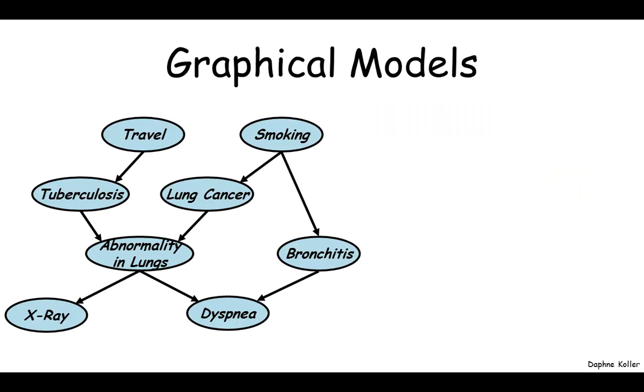So what does a graphical model look like? It takes all of these different things that we're uncertain about and tries to show how they relate to each other. So this, for example, is a baby model for medical diagnosis that includes things like predisposing factors, diseases, and test results and symptoms.